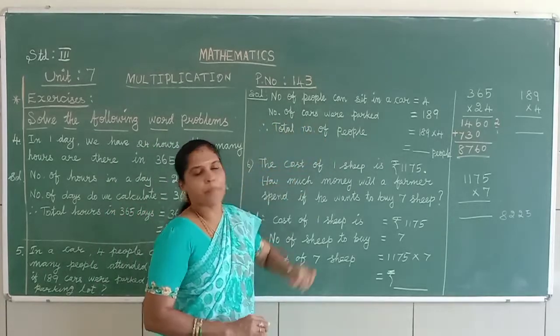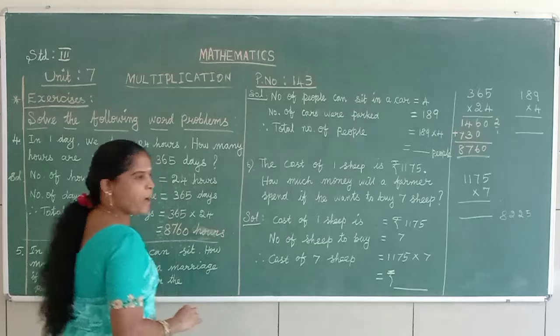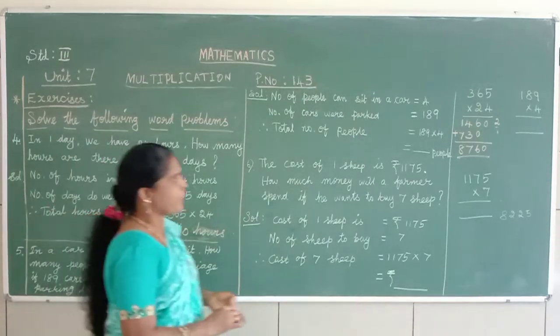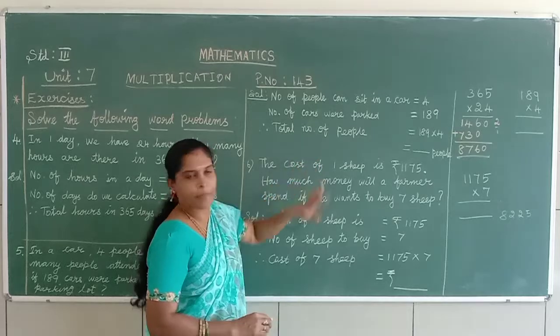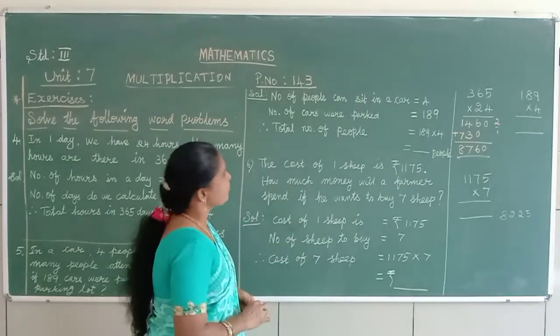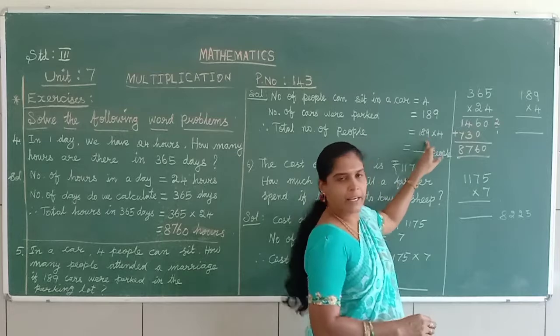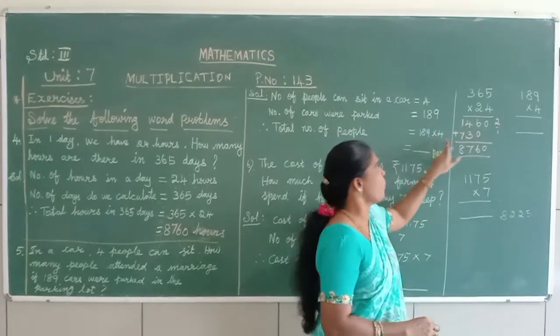And number of cars by parking. How many cars parked in the parking area? 189. That total number of people come and attend a function. So, 189 into 4.